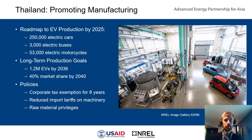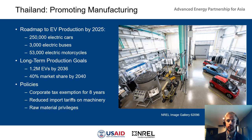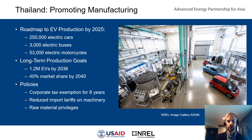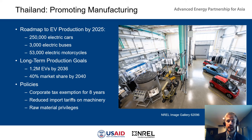Thailand is pushing to promote manufacturing as its primary objective. The roadmap to EV production by 2025 calls for 250,000 electric cars, 3,000 electric buses, and 53,000 electric motorcycles — pale compared to long-term goals of 1.2 million EVs annually by 2036 and 40% market share by 2040. Policies favor EV-producing companies: a corporate tax exemption for EV factories for 8 years, a reduction in import tariffs on machinery, and raw material privileges. Thailand also has some raw materials valuable for lithium-ion batteries.